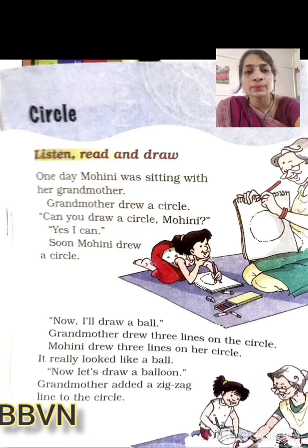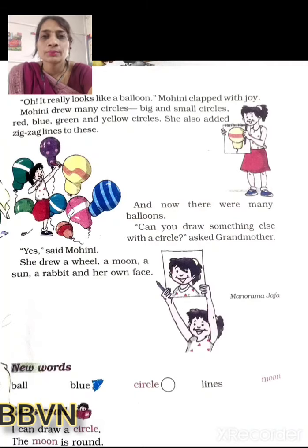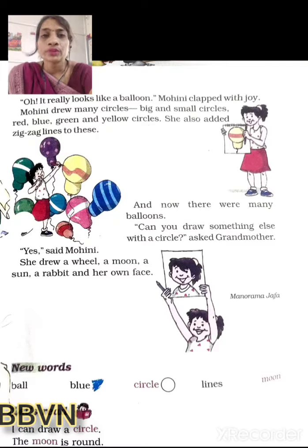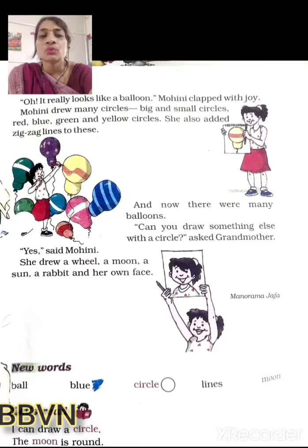Now students turn to next page, page number 57. Oh! It really looks like a balloon. Mohini clapped with joy. Jaise hi grandma ne zigzag line banayi, Mohini ne dekha aur usne bola — are yeh toh ekdam balloon ke jaisa hai! Mohini clapped with joy. C-L-A-P-P-E-D, clapped. Joy ka matlab khush hona. So Mohini khushi ke maare clapping karne lag gayi.